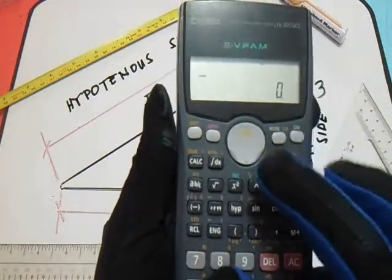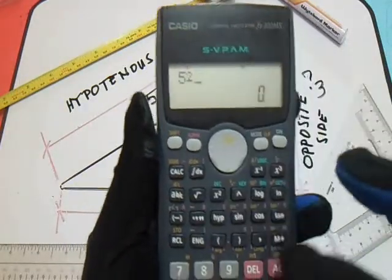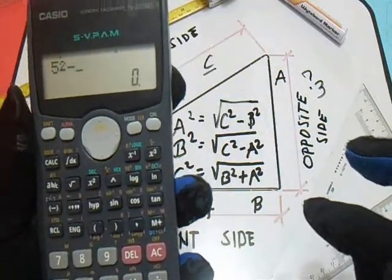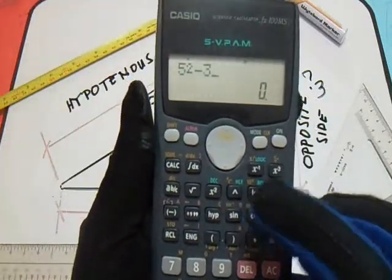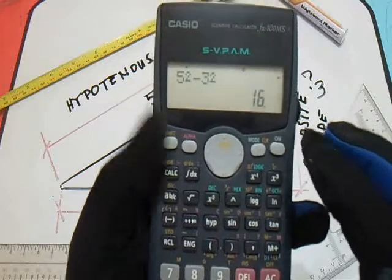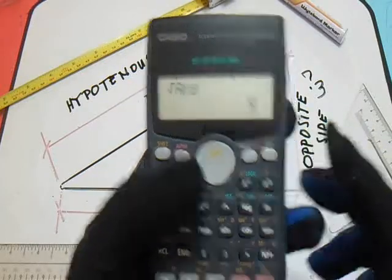So 5 squared minus then 3 squared equals... minus square root of 16... 4.